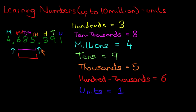Quite often, what you may face is the question gives you some of these values and then you have to write the number down. If one of these is zero, or it's not mentioned, that means it must be zero — so write a zero down. The units is very simple.